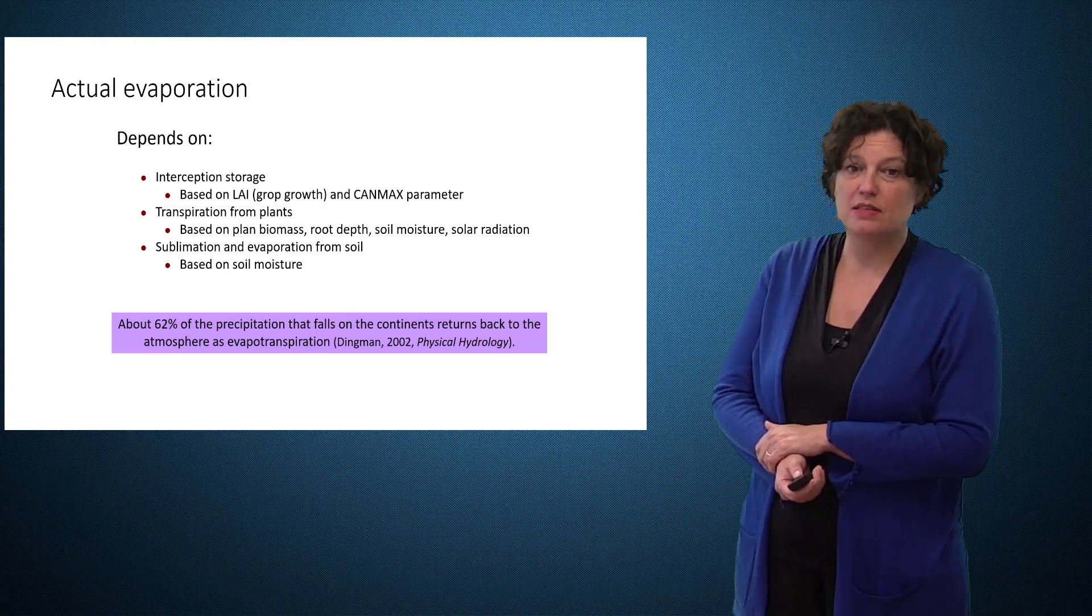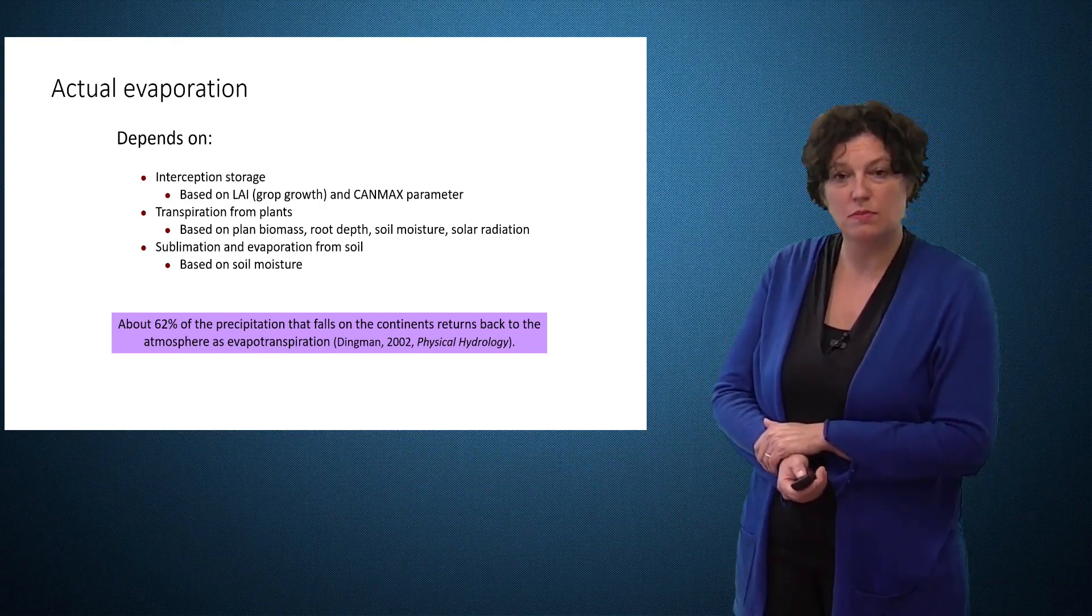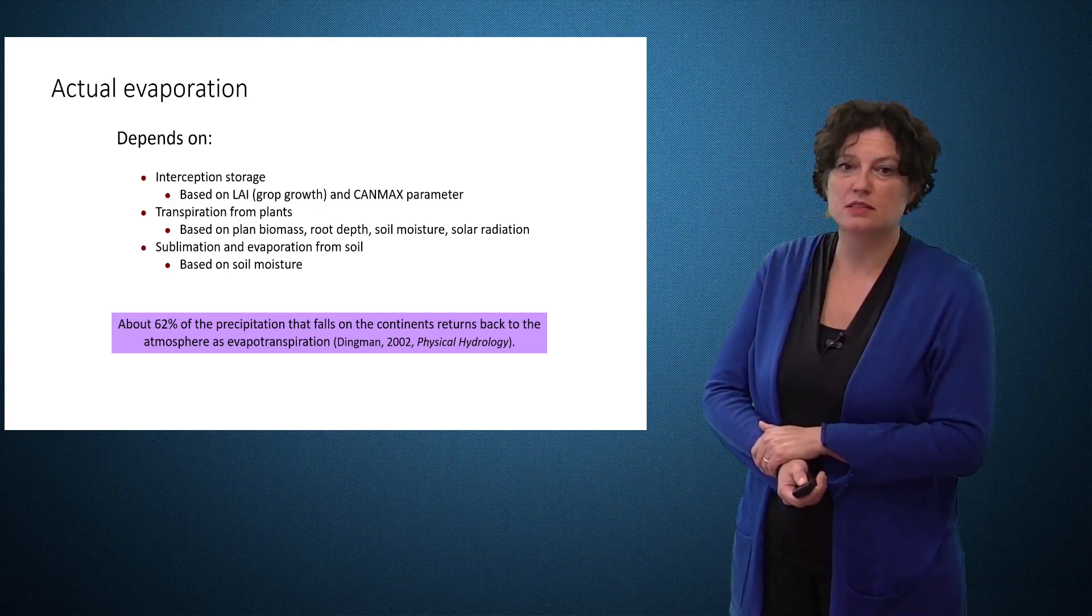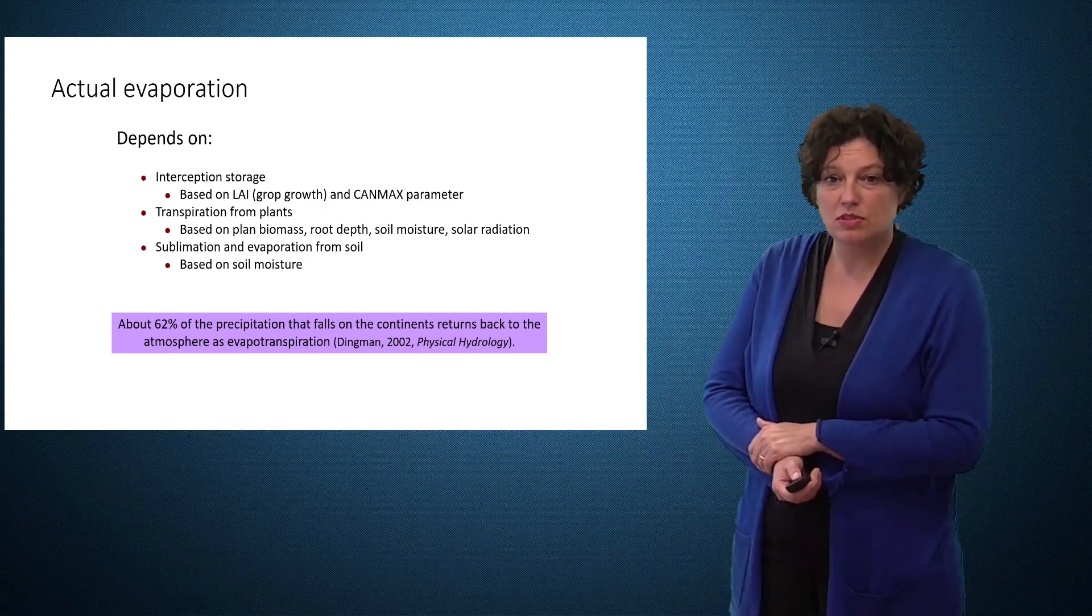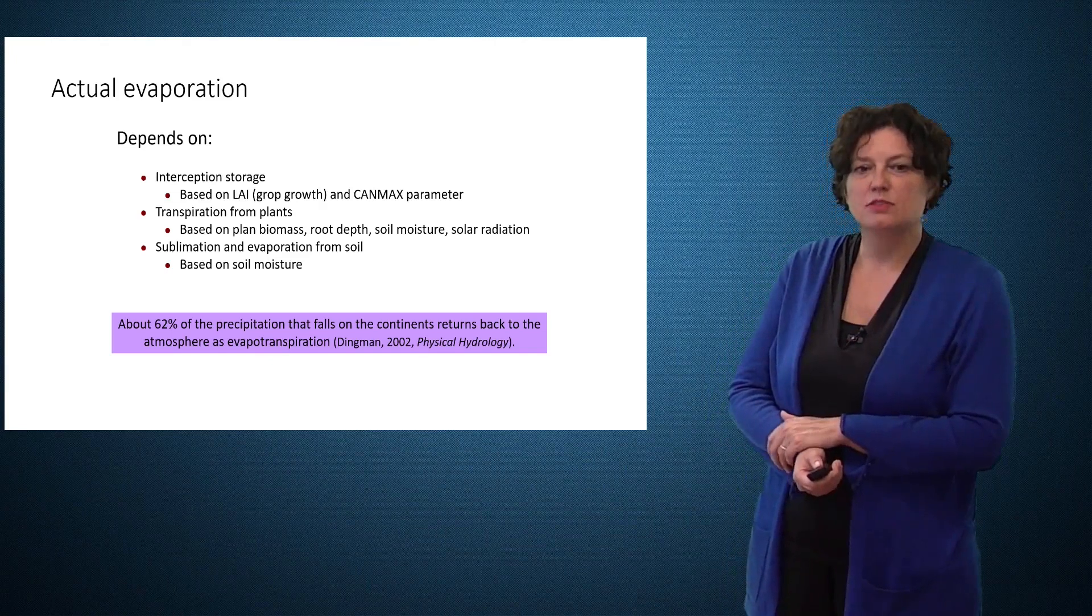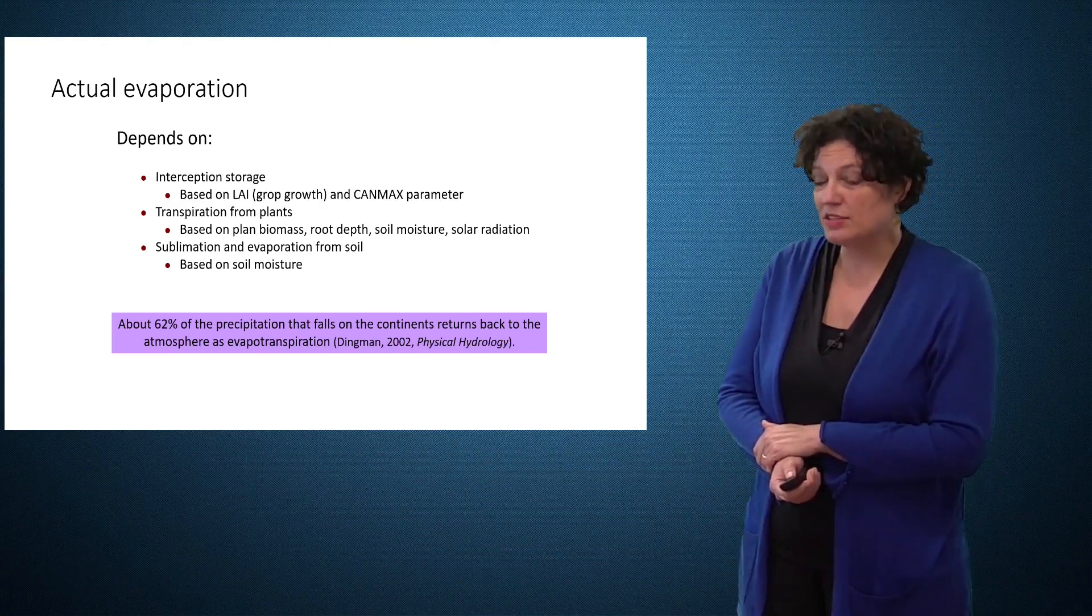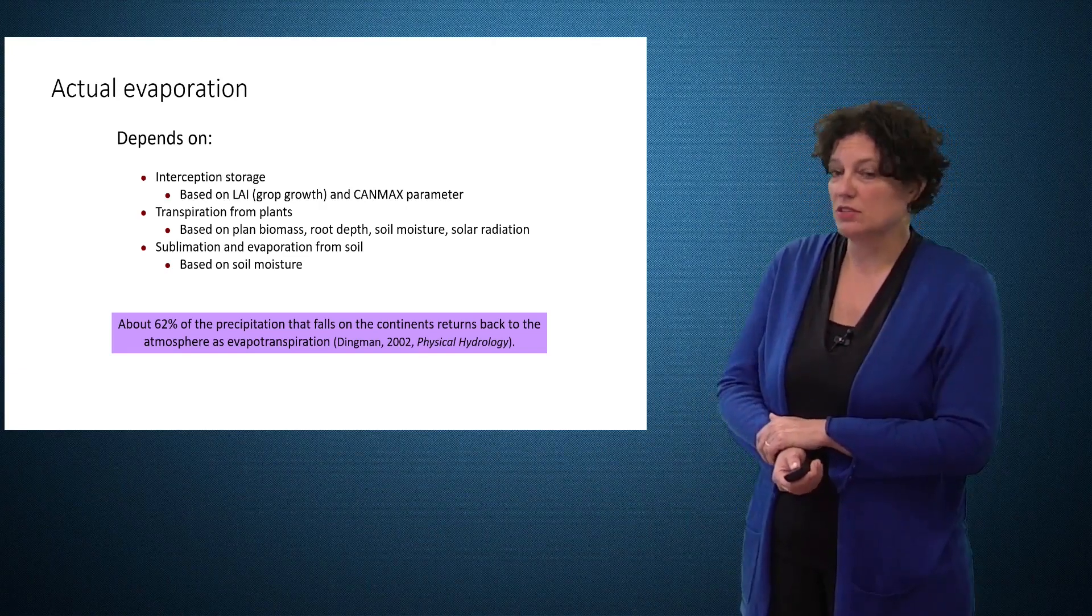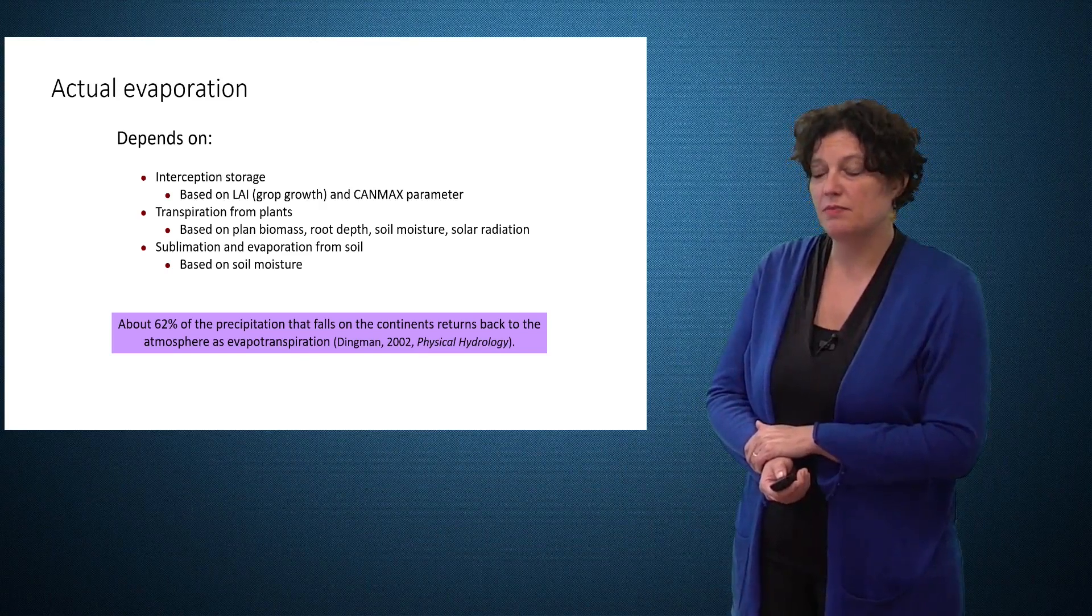The actual evaporation depends on interception storage, which is then again related to leaf area index, but also to a parameter called CANMAX. Then we have transpiration from plants, which of course depends on the availability of plants represented through biomass, but also the root depth is of importance, together with soil moisture and solar radiation. We can have sublimation directly from the soil, based on soil moisture. Evaporation is very important. 62% of the precipitation that falls on the continents return back to atmosphere in the form of evapotranspiration. In arid areas this may be even a lot higher, for instance 90%.